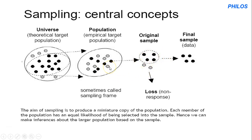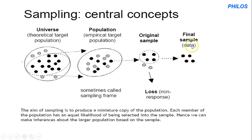Sampling frame is the list of all accessible members of your population. For example, if you took a sample of six from a population and sent your questionnaire to them but only four responded and two failed to respond, that's a loss or non-response. The four that responded is your final sample or data.